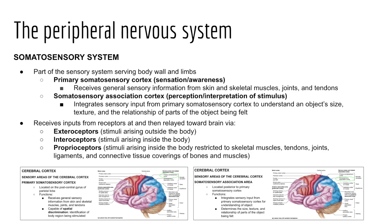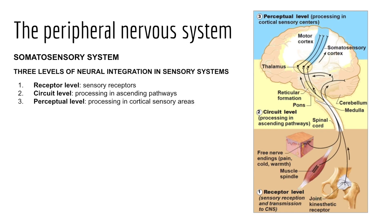The somatosensory system receives input from exteroceptors, interoceptors, and proprioceptors in the body, and is designed in three levels. The receptor level is where sensory receptors reside. The circuit level involves ascending pathways toward the CNS — routing afferent fibers up to the thalamus. The perceptual level involves processing in the sensory areas of the cerebral cortex, where information is routed to the appropriate sensory area.